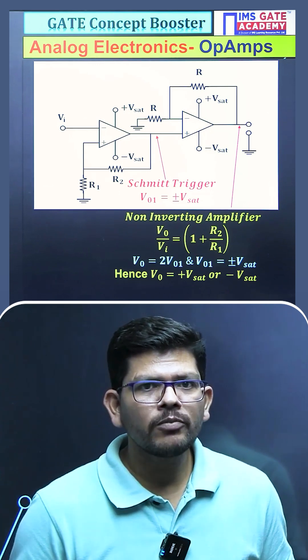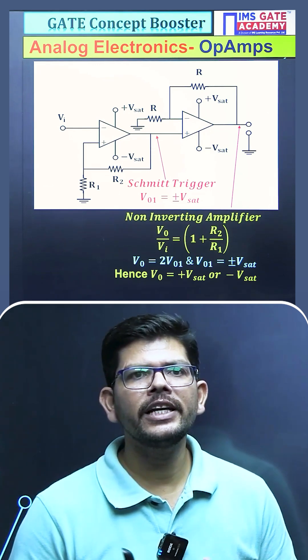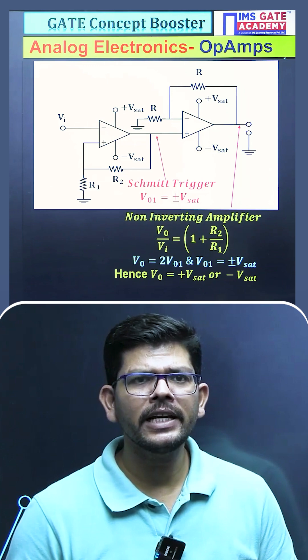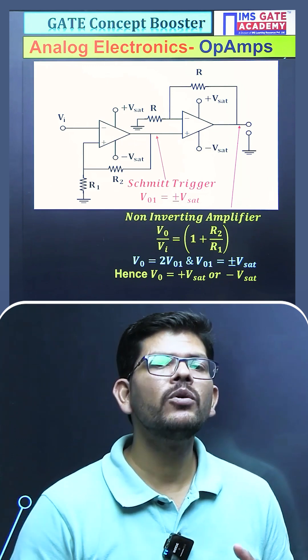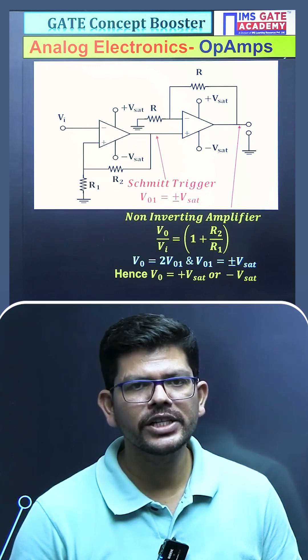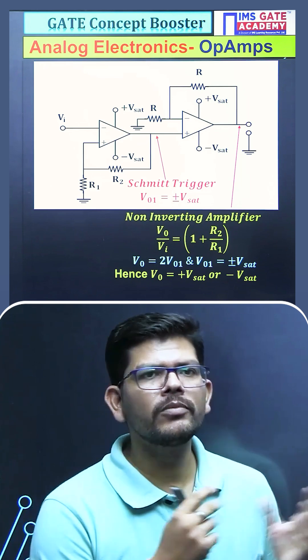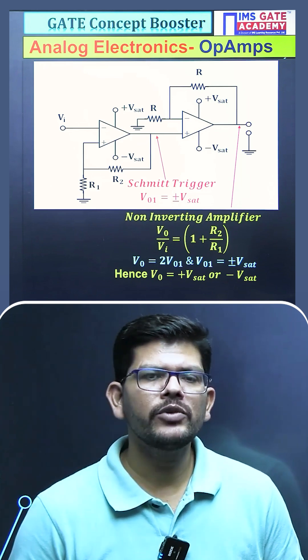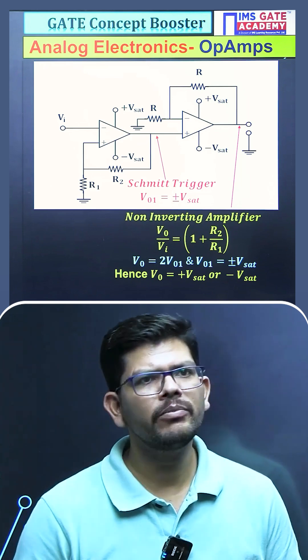What is the output of the first op-amp? It is fluctuating in between plus/minus Vsat. We cannot have the output voltage of the op-amp more than the saturation value, so what will be the output of the final op-amp? It will be fluctuating in between +Vsat to -Vsat.